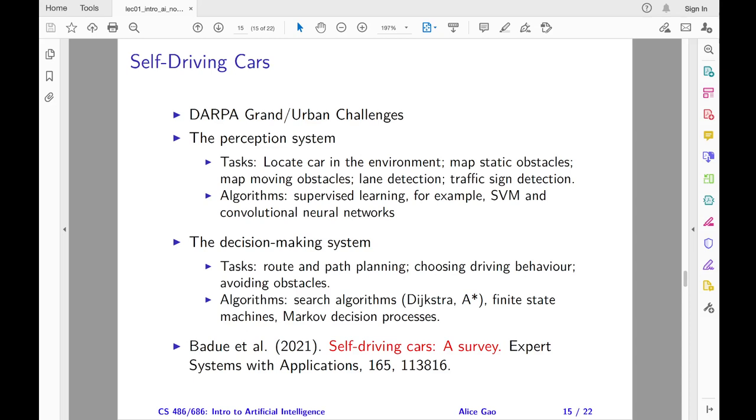So, what does it take to build a self-driving car? A self-driving car consists of two main parts, the perception system and the decision-making system. The perception system tries to understand the environment, whereas the decision-making system determines what the car should do next.